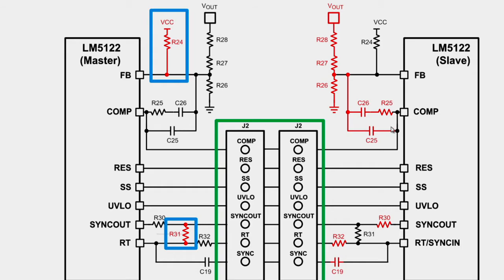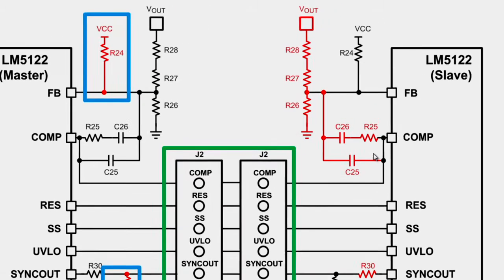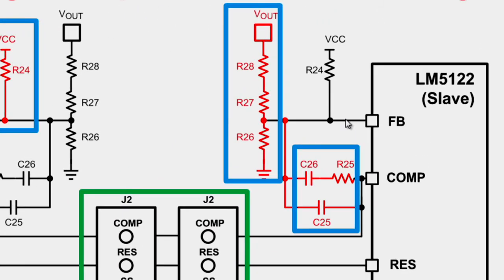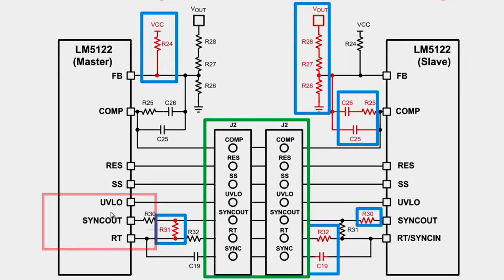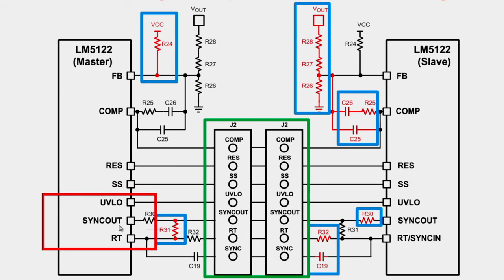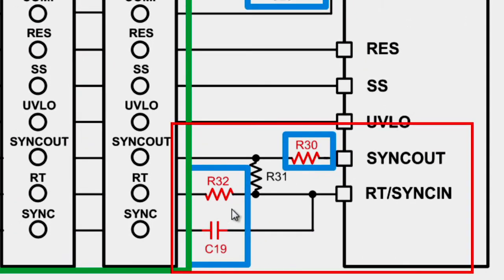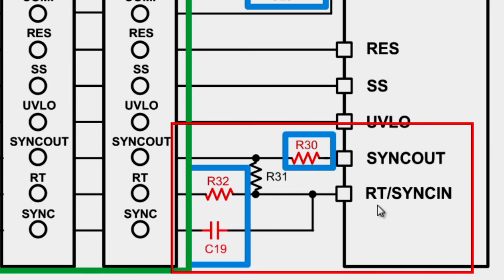For the slave mode configuration, the feedback pin should be tied to VCC and the components related with output voltage feedback and loop compensation should be removed. In addition, the sync-out pin from the master board should be connected to the sync-in on the slave board.